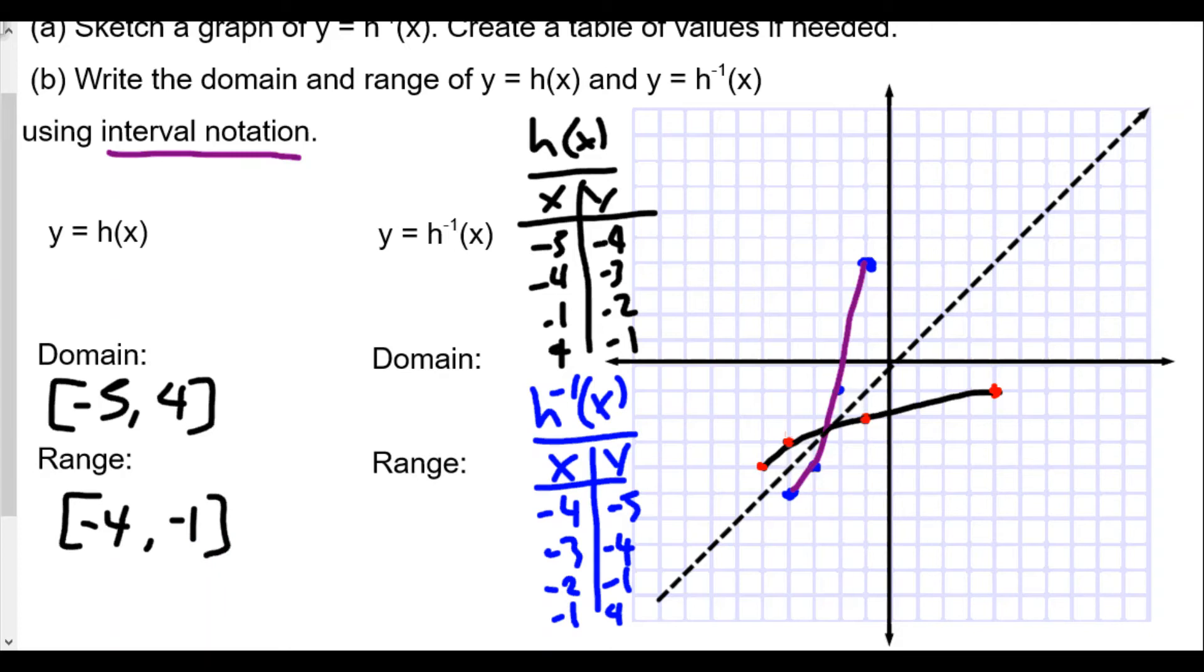Now the domain for our inverse here, we see the leftmost x value is negative 4 and the rightmost x value is negative 1. So we include those values too. You will notice this is the same exact range, the same exact values we found in the range. And in the same way, for our range of the inverse, the lowest y value is negative 5 while the highest y value is going to be 4.